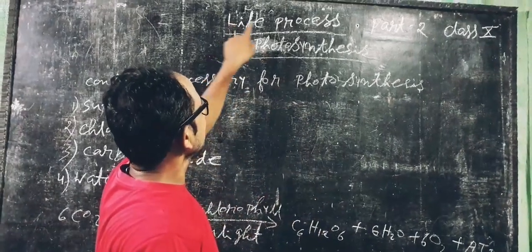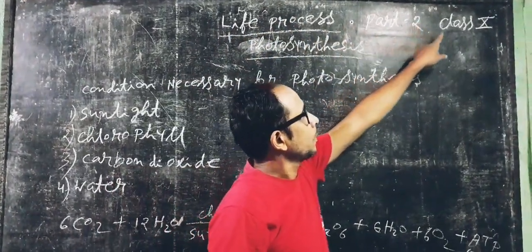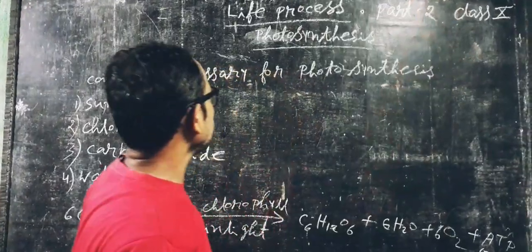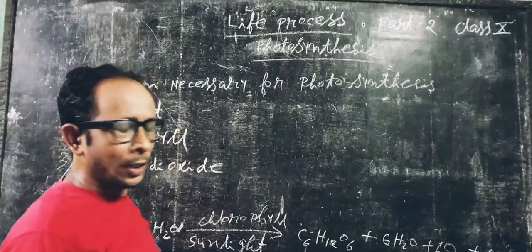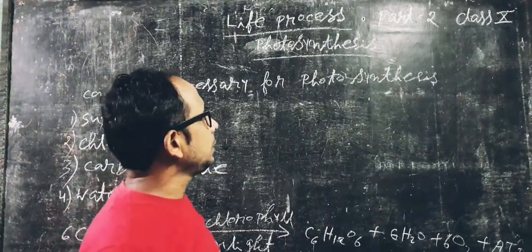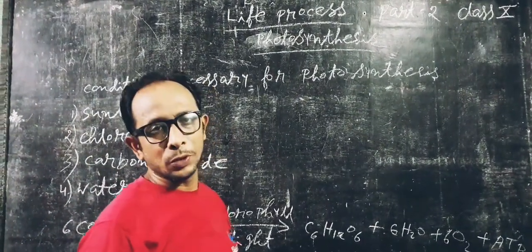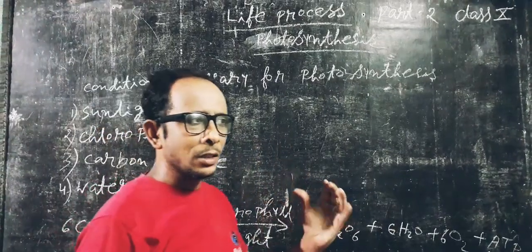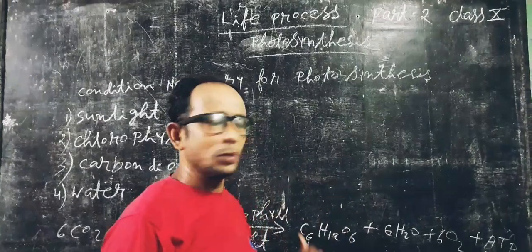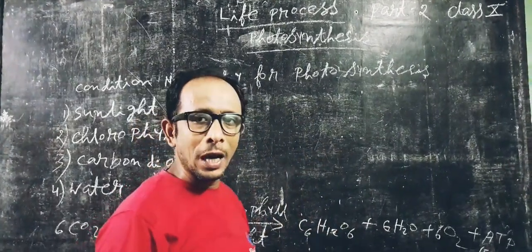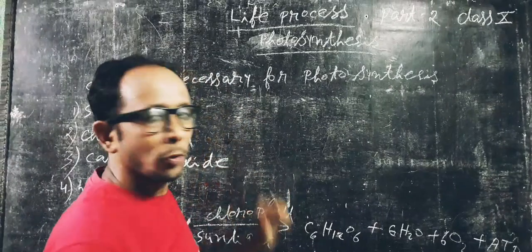Hello students, today we discuss life process part 2 of class 10. Today we discuss about photosynthesis. In the previous class we discussed about the autotrophic mode of nutrition — those organisms that are able to make their own food are known as autotrophs, and the process is known as autotrophic mode of nutrition.